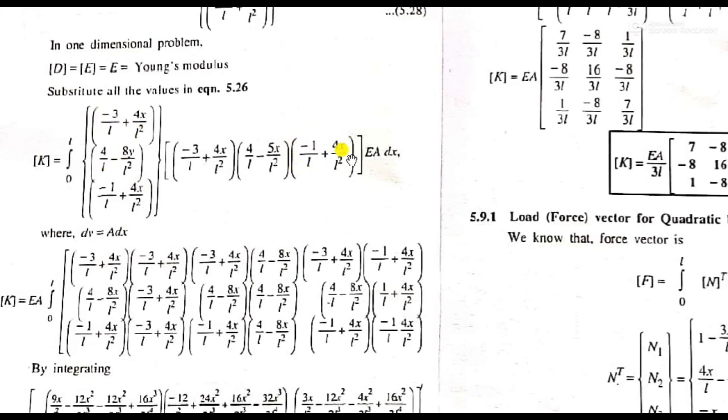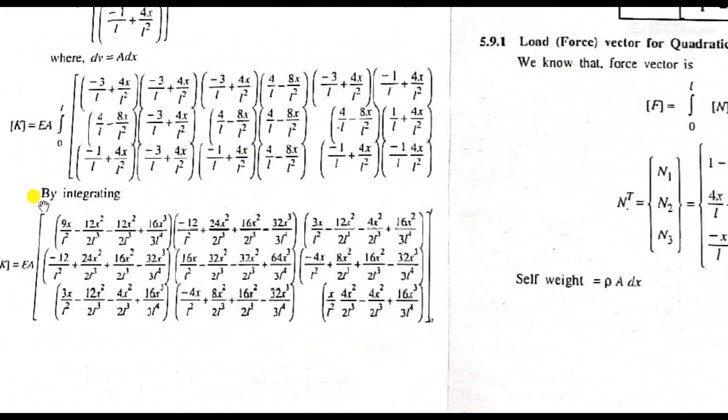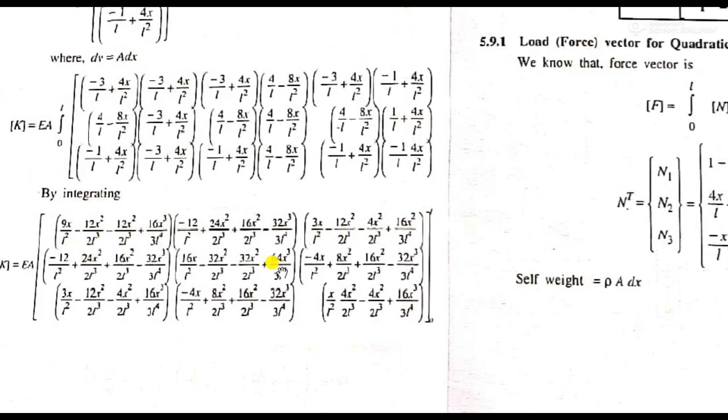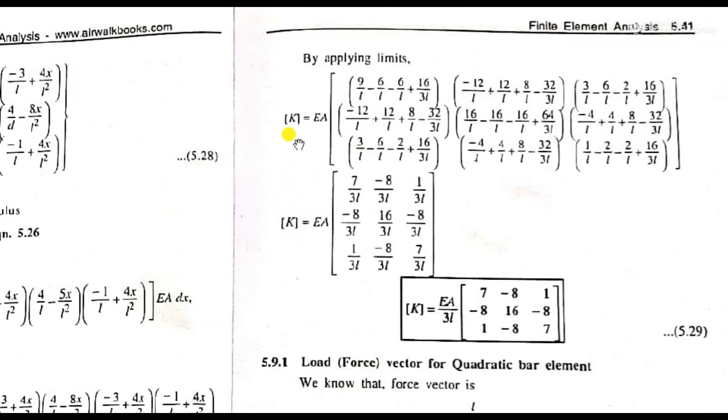By integrating all these terms, we integrate from 0 to L with respect to x. When x equals 0, the lower limit, and when x equals L, the upper limit, we substitute these values. The integration will give us the final stiffness matrix.